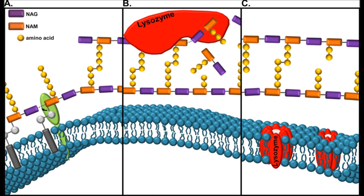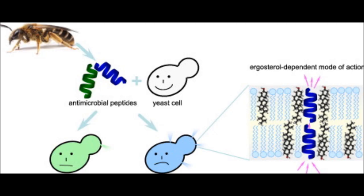Lysozyme is another important ingredient of honey which inhibits a broad spectrum of gram-positive bacteria and some fungi by hydrolyzing their cell wall. Bee peptides present in honey are bacteriostatic in nature, meaning they do not kill but prevent the growth of bacteria by keeping them in the stationary phase of growth.